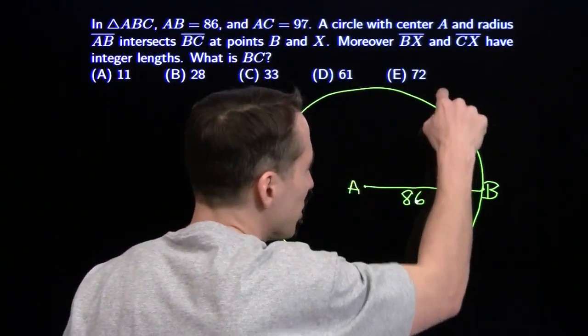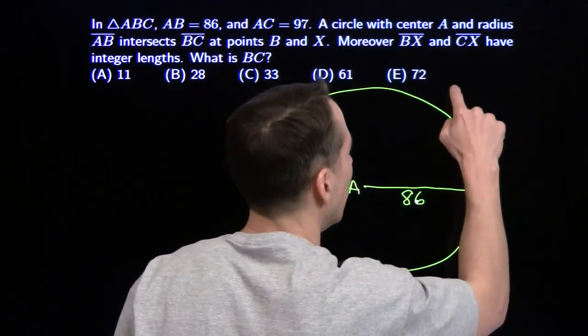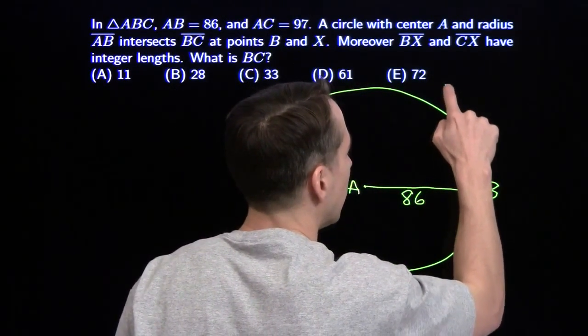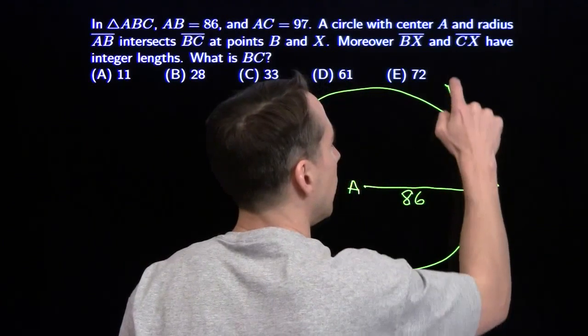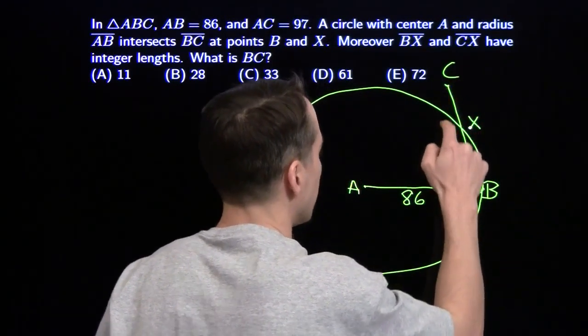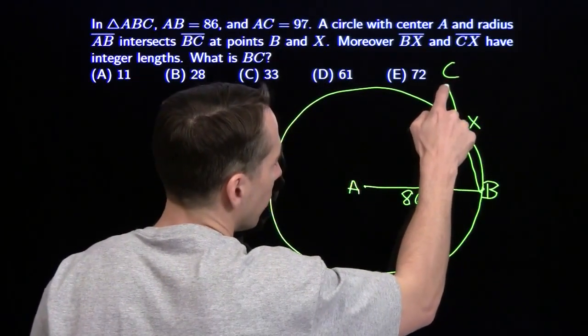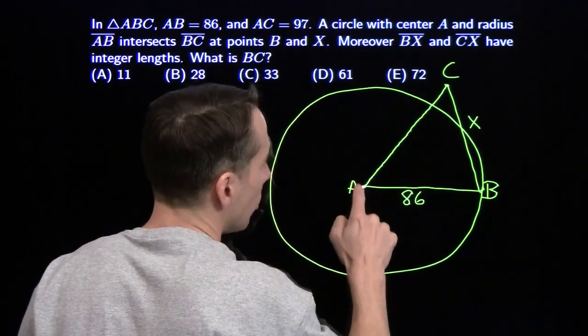So I know that C, I've got to put C somewhere so that BC will hit the circle, I'm going to put it right there. Call that C, call this X, and we'll go ahead and finish our triangle right there.